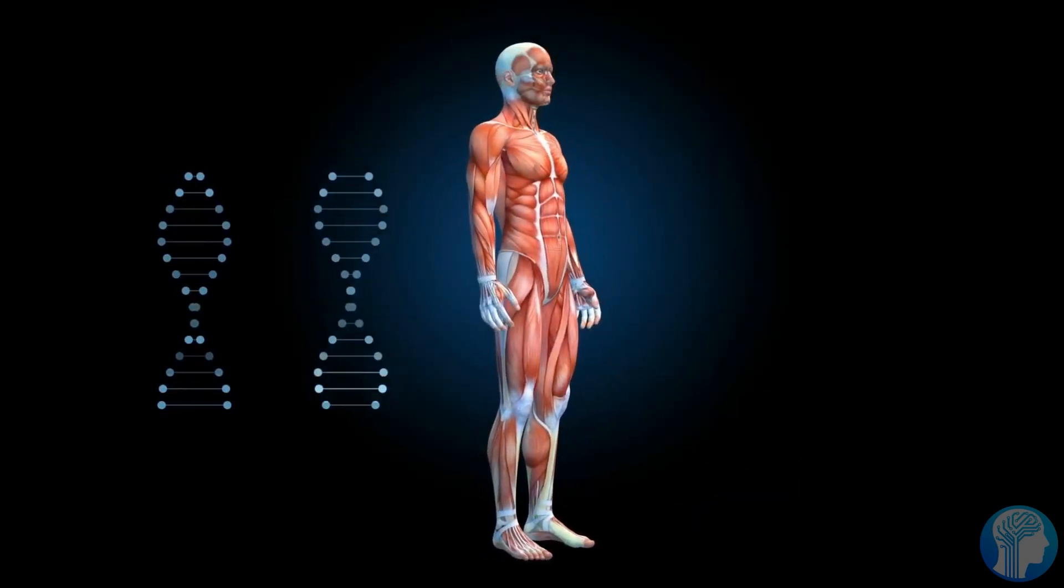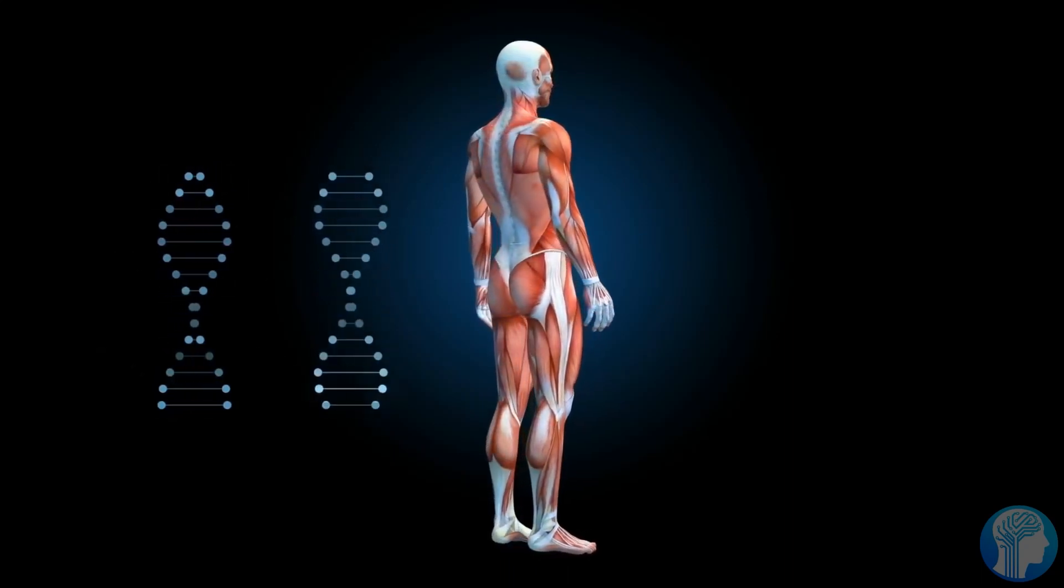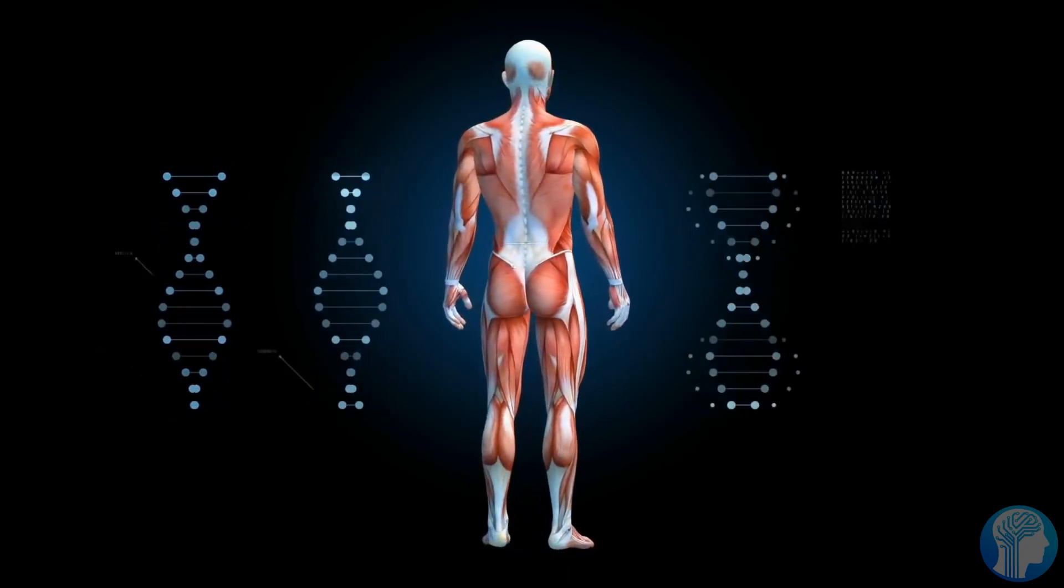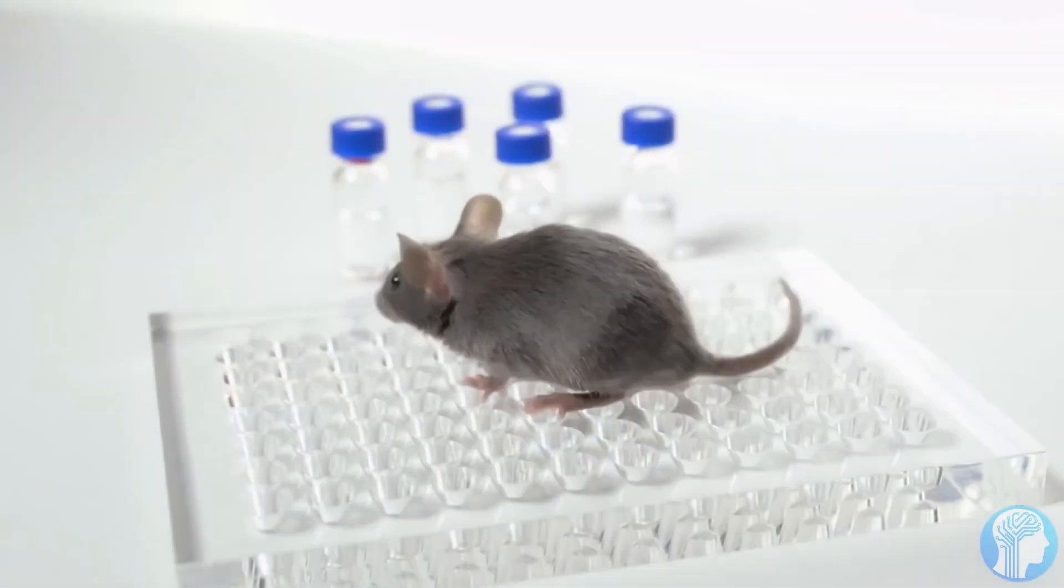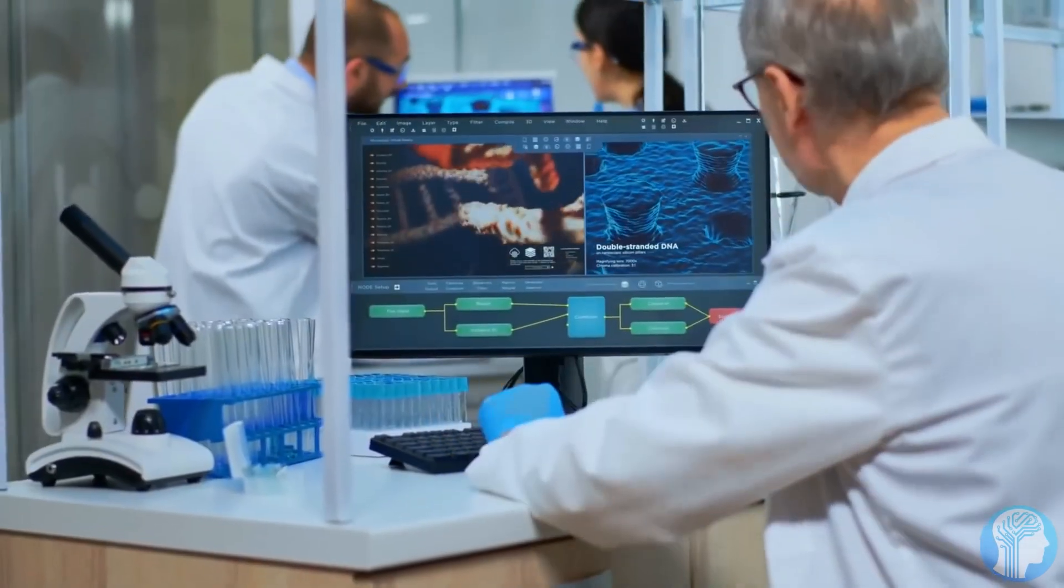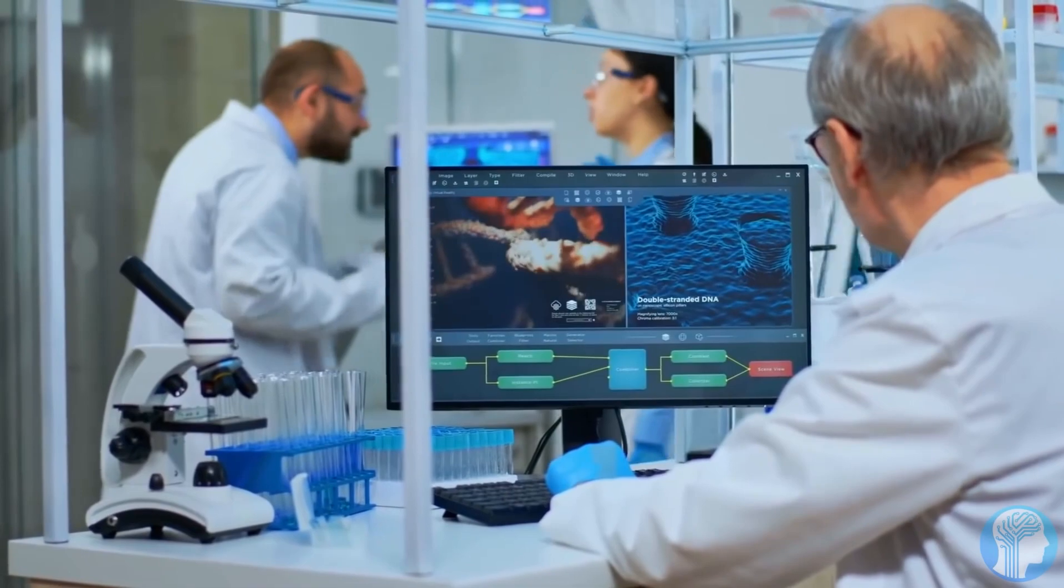Sinclair's team genetically engineered a mouse strain that, when given a particular drug, makes an enzyme that cuts their DNA at 20 sites in the genome, which are then faithfully repaired. As a result, the mice ended up with an epigenetic signature more like that of older animals, and their health deteriorated. They lost hair and pigment and showed multiple signs of frailty and tissue aging.